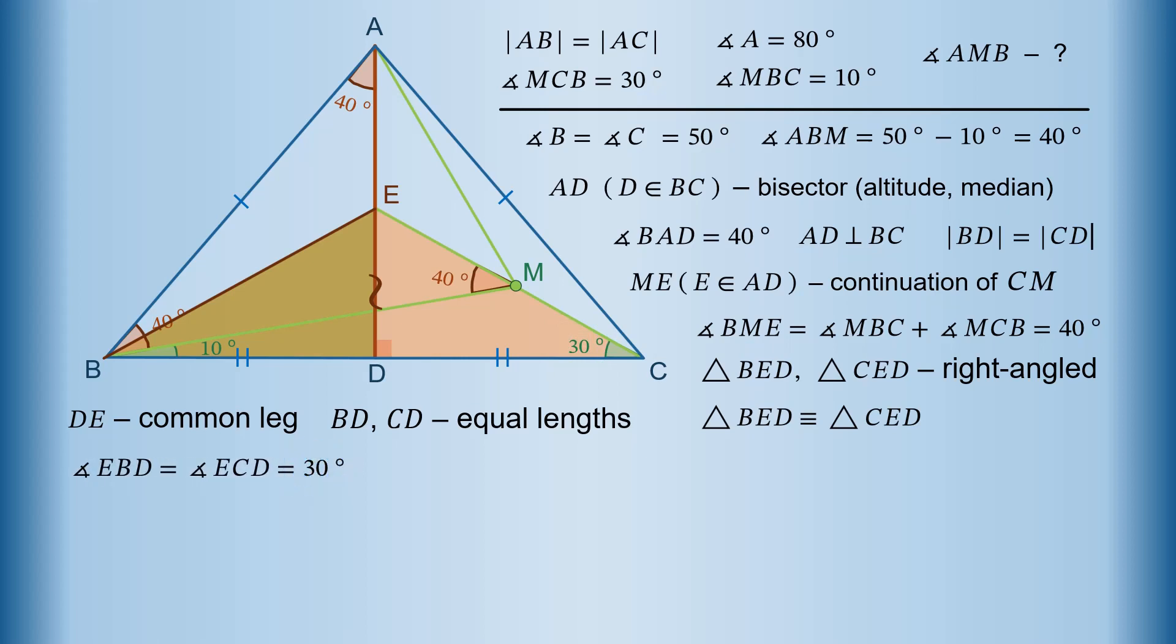And in order to find the value of angle MBE, we need to subtract 10 degrees out of 30 degrees. This gives 20 degrees for the value of angle MBE, which is exactly half the value of angle ABM. This means that BE is the bisector of angle ABM, and the value of angle ABE is also 20 degrees. This is your last chance to complete the solution on your own.